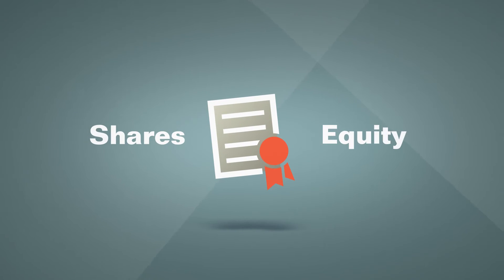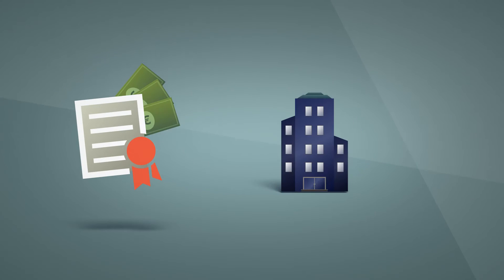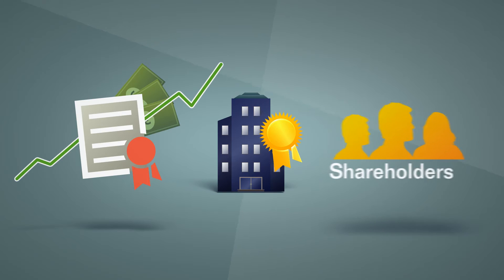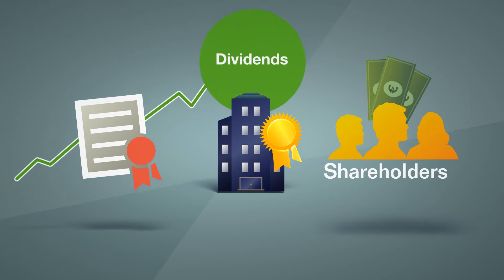In simple terms, a share is an ownership certificate, which means that if you buy a share you have a stake in a company. This gives you certain rights, notably the right to share in its success. If the value of its share rises, the company may decide to make payments to its shareholders known as dividends.